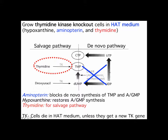You can have cells completely lacking the normal de novo synthesis process, or grow them in a medium that blocks those enzymes. That's the HAT medium — hypoxanthine, aminopterin, thymidine. If you grow cells in HAT medium, you block this process because aminopterin blocks the DHFR enzyme, which is important for going from UDP to UMP and ending up in TMP. Hypoxanthine allows you to make AMP, and then thymidine kinase gives you TMP, leading to all the other necessary downstream products.